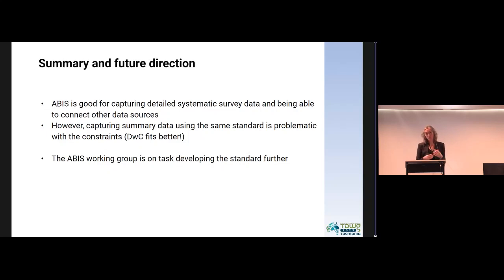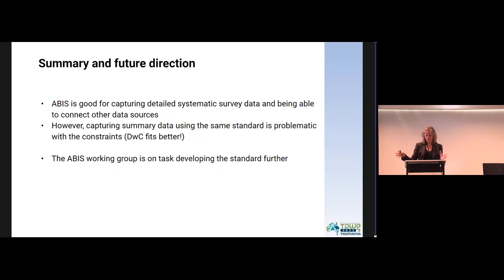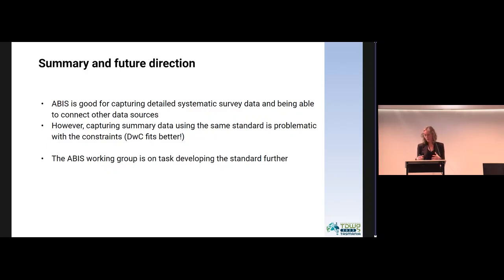Darwin Core works better in terms of being very specific and easy to understand, but the variation in the data makes it harder to be more consistent. So there are pros and cons to the two different standards. With ABIS, we can expand out and use other information to supplement what the data represents in Darwin Core — adding things not usually represented in Darwin Core. We're working with the ABIS working group to develop the standard further, understanding how it's being used and looking at constraints and ways we can manage the data better.